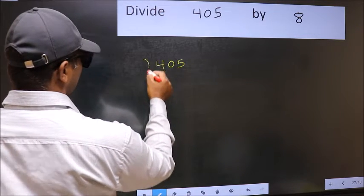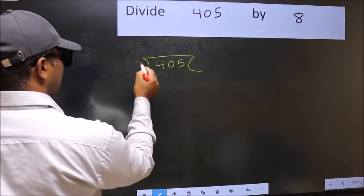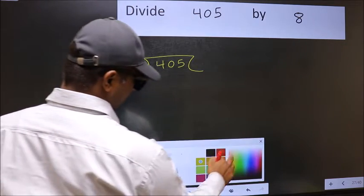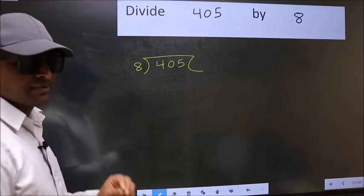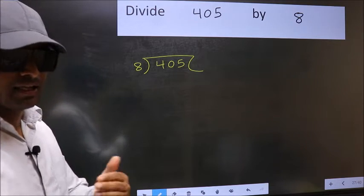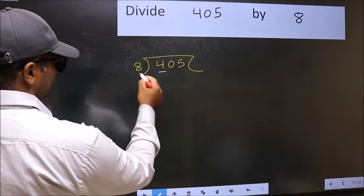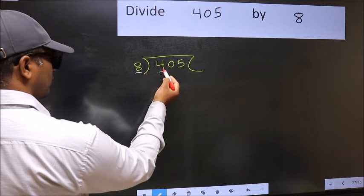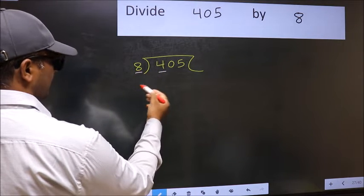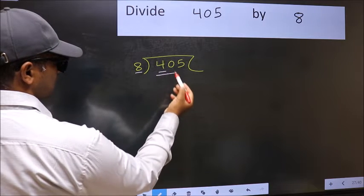405 and 8 here. This is your step 1. Next, here we have 4 and here 8. 4 is smaller than 8, so we should take two numbers, 40.